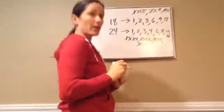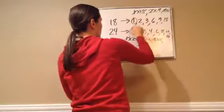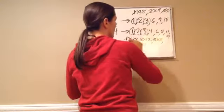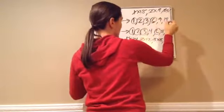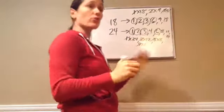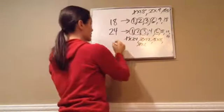All right, let's find the common factors: 1, 2, 3, 6. That's it. So what's the greatest common factor? 6.